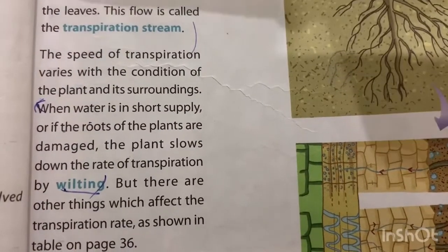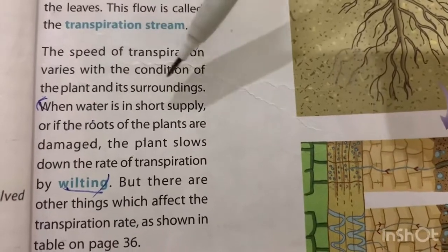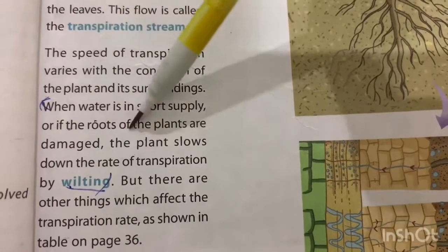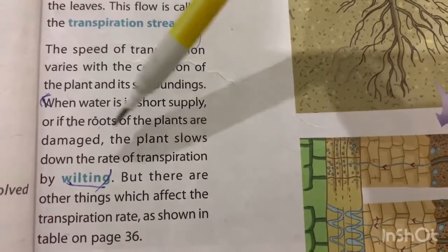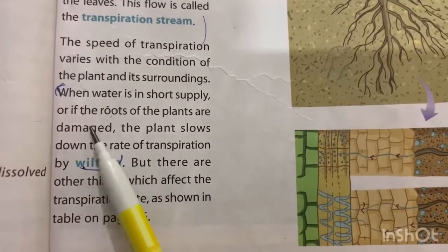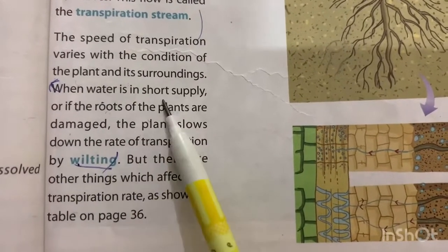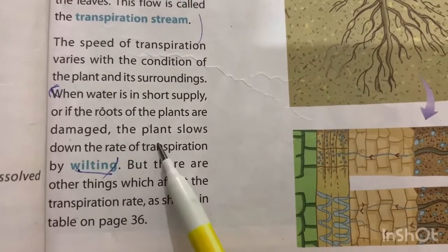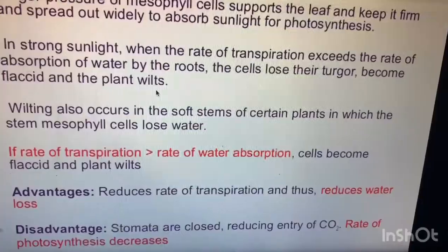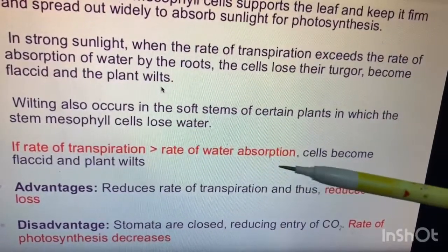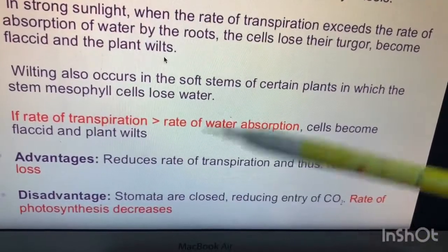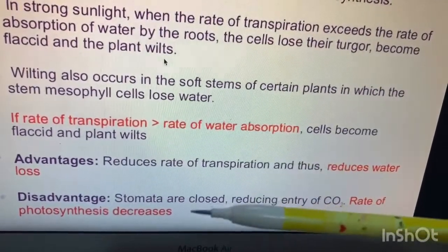The speed of transpiration varies with the condition of the plant and its surroundings. When water is in short supply, or if the roots of the plants are damaged, the plant slows down the rate of transpiration by wilting. If the rate of transpiration decreases, the rate of water absorption decreases, cells become flaccid and the plant wilts. There is both an advantage and a disadvantage to wilting.